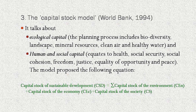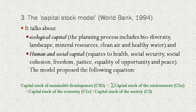Another principle is the capital stock model, proposed by the World Bank in 1994. It talks about ecological capital and human social capital. Ecological capital includes biodiversity, landscape, mineral resources, clean air, and healthy water. Human social capital includes health, social security, social cohesion, freedom, justice, equality of opportunities, and peace. The model proposes an equation: the capital stock of sustainable development equals the sum of the capital stock of the environment, capital stock of the economy, and capital stock of society. This reflects how the quality of environment, status of economy, and status of society together constitute sustainable development.